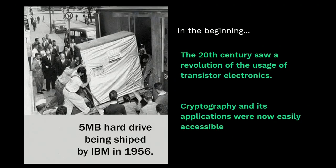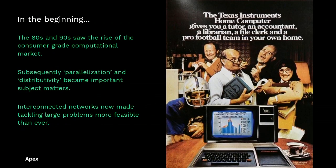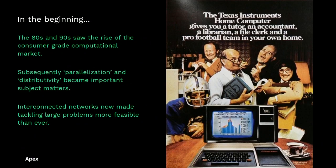Cryptography and ciphers have been used for millennia in a variety of contexts. Applications run from politics and warfare to economy and much more. The 20th century saw a rise in the use of transistor electronics and processing power increased exponentially — now cryptography and its applications were available to the masses. The 80s and 90s saw the rise of the consumer-grade computational market; computers were more integrated into our lives than ever before. Subsequently, parallelization and distributivity became important subject matters, and interconnected networks meant that we could tackle larger problems than ever before.